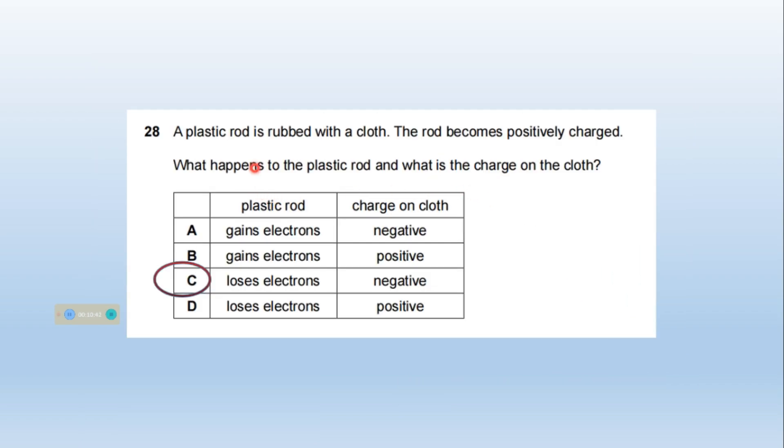A plastic rod is rubbed with a cloth. The rod becomes positively charged. What happens to the plastic rod? And what is the charge on the cloth? As the rod becomes positively charged, positively charged means deficiency of electron. And the electrons are accepted by the cloth. So cloth becomes negative. So charge on cloth negative. Charge on plastic rod, it loses electrons. Option C is right.